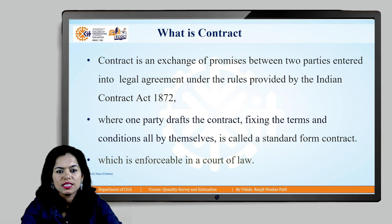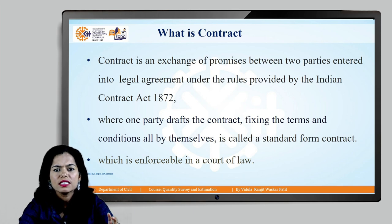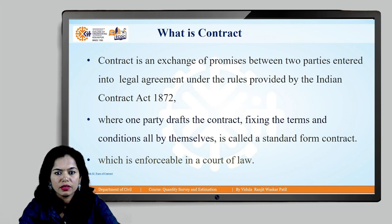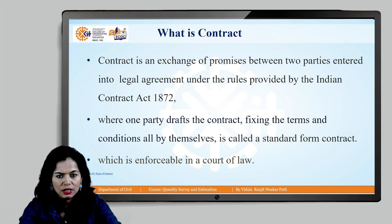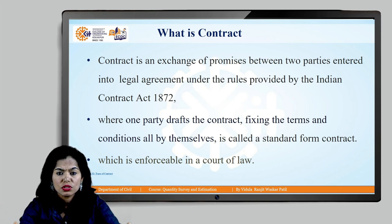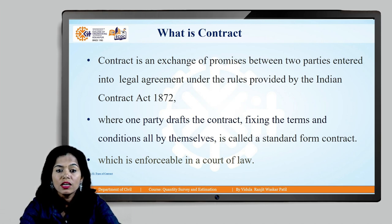Before moving to what is tender and what is contract, we will start with contract. A contract is nothing but an exchange of promise between two parties who enter into a legal agreement. This is done under the rules provided by the Indian Contract Act 1872, where one party drafts the contract fixing the terms and conditions. Both parties have freedom to make their own rules, terms, and conditions, but they have to follow the guidelines provided by the Indian Contract Act. This agreement is enforced by both parties in the court of law.